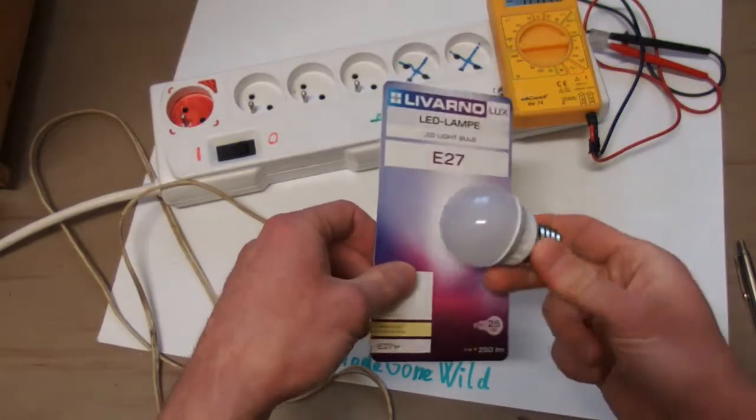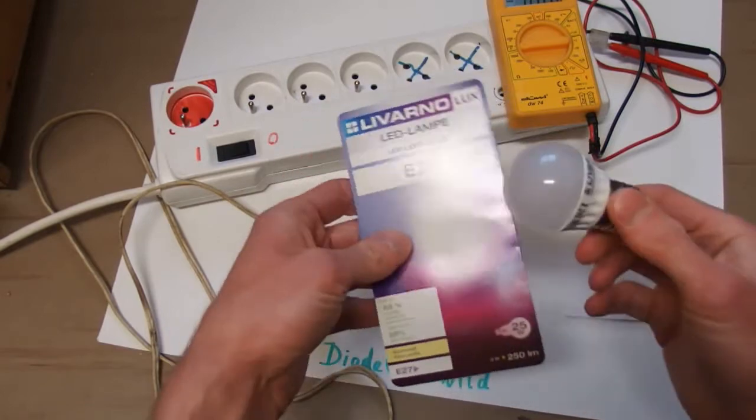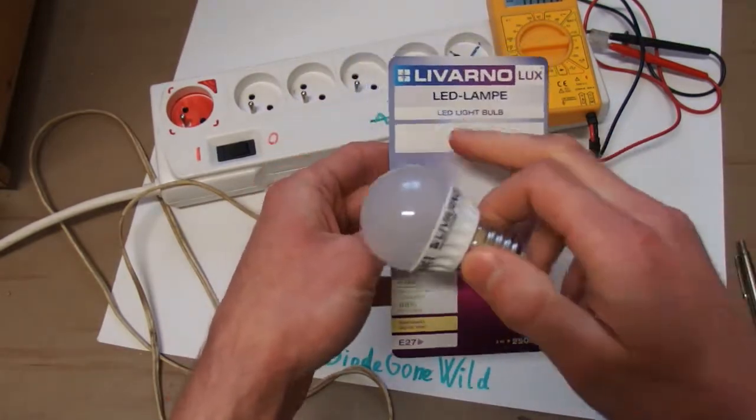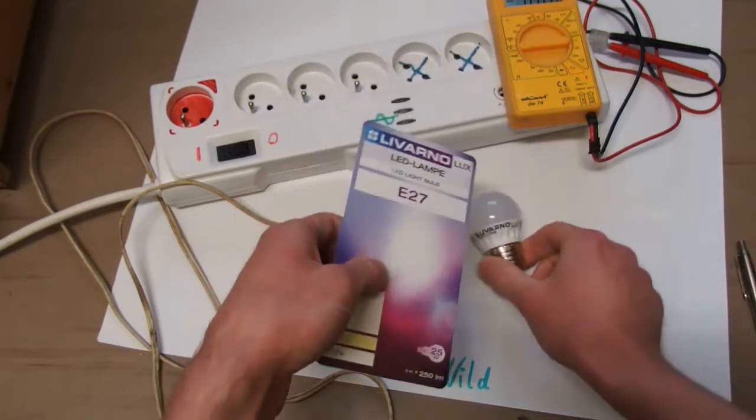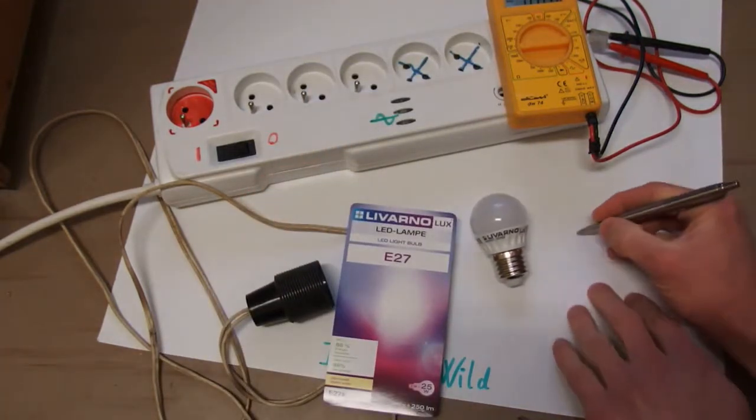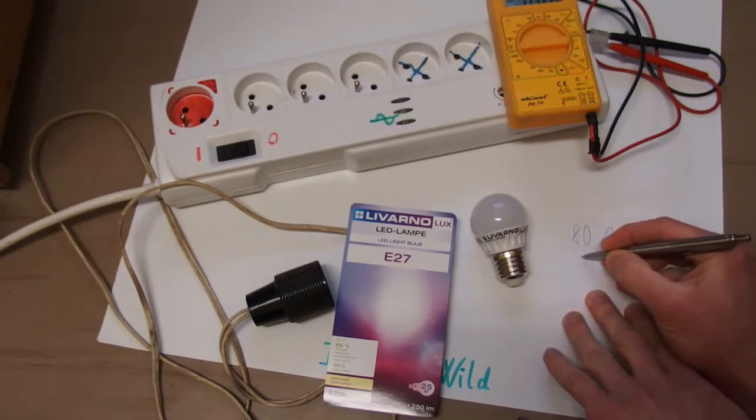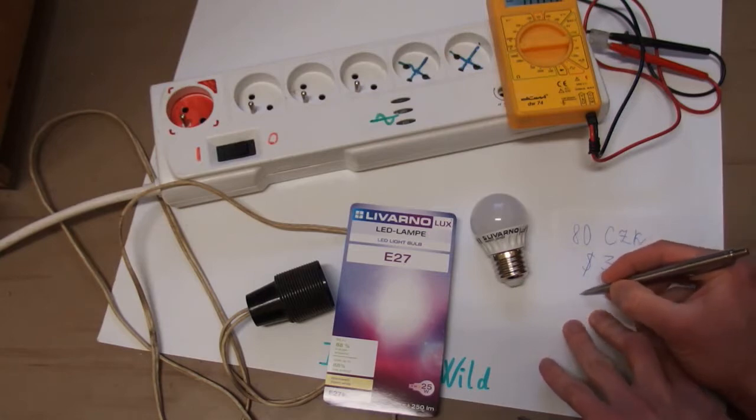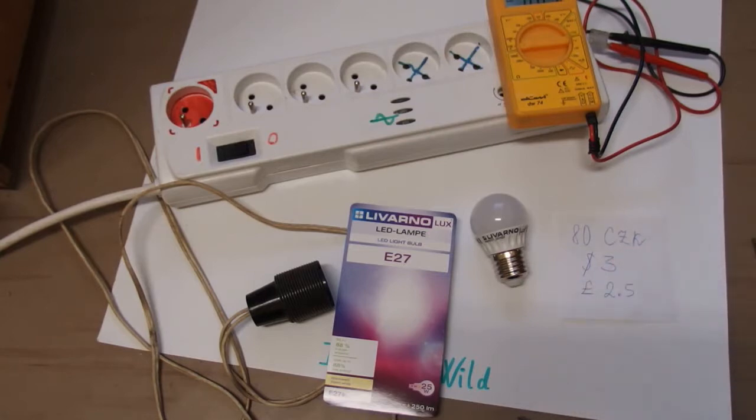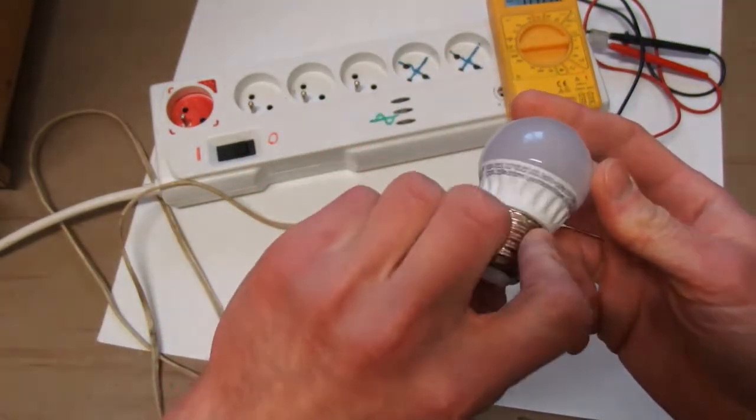I've decided to make another teardown of an LED light bulb because there's basically never enough of LEDs. This time it's the 3 watt LED from Livernolux. I bought this one in a local supermarket called Lidl and it cost me about 80 Czech korunas, which is about 3 US dollars or about 2.5 pounds. I'm really interested what's inside and if it's really 3 watts.